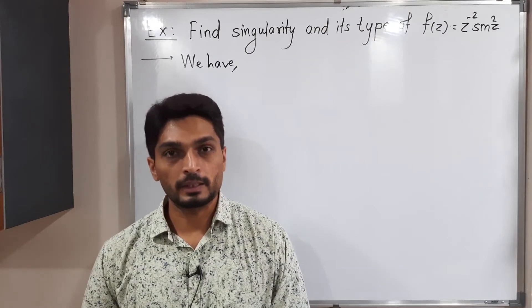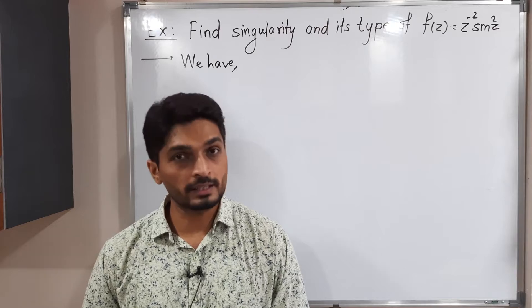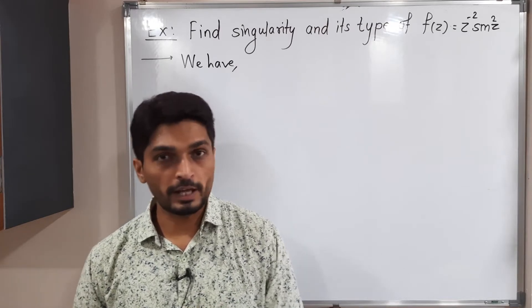Let us discuss this example. In this example, we have a function f(z) = z/(2 - 2sin²z). We have to find its singular point as well as type of singularity.